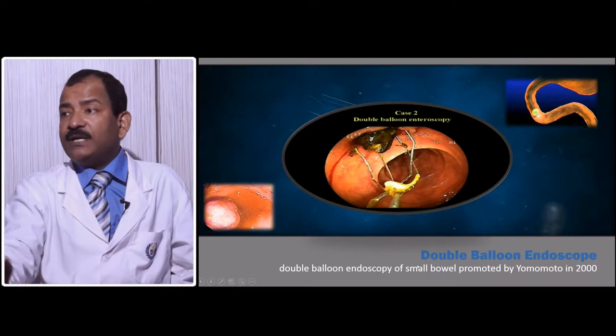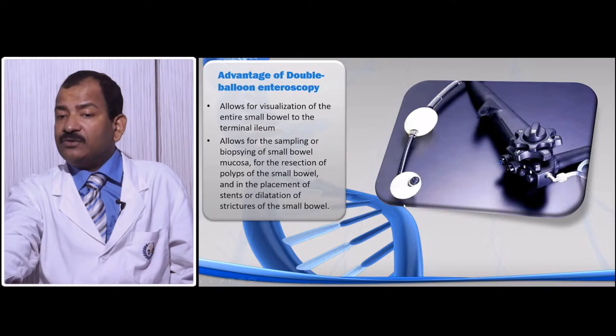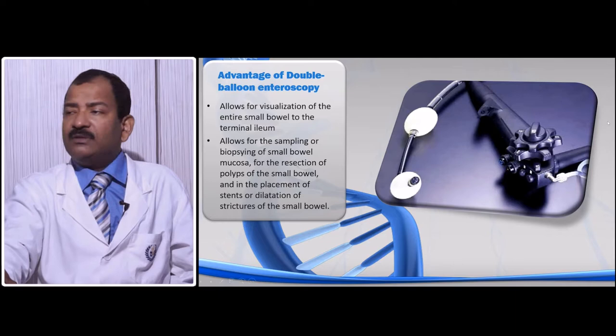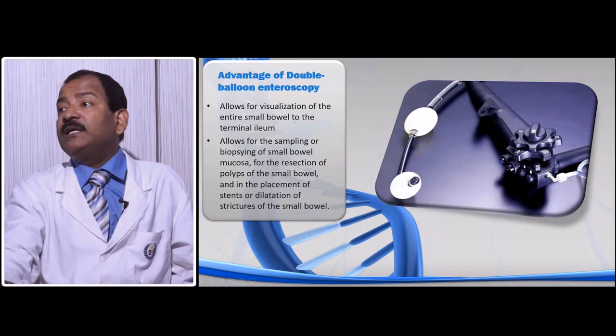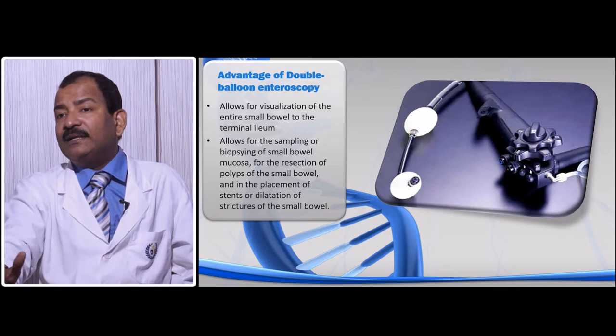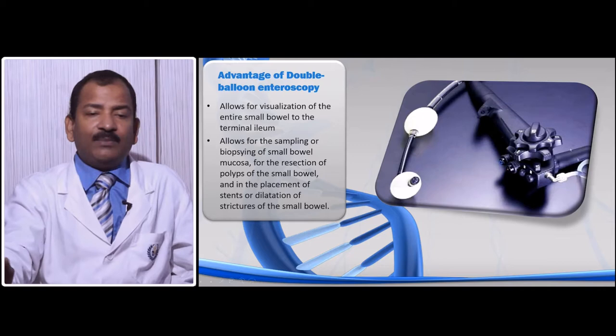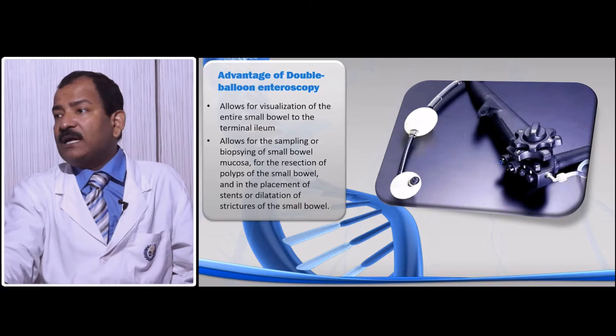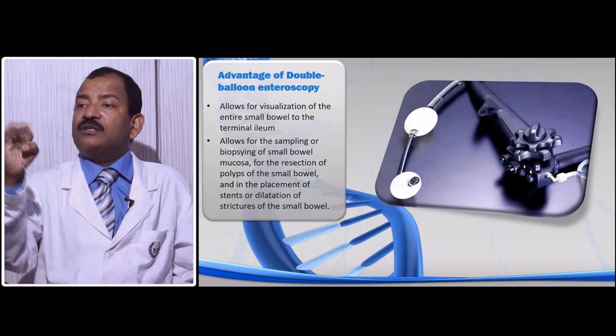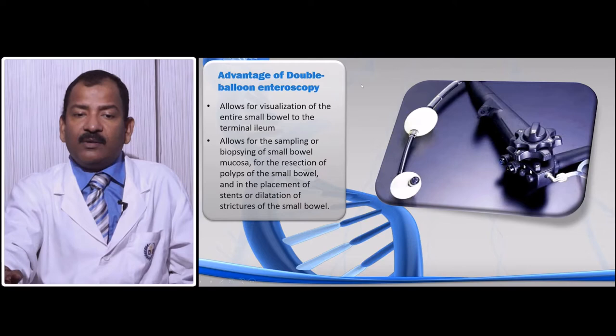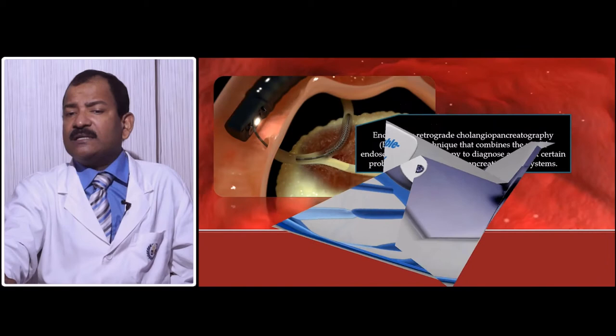Occasionally a balloon can rupture, causing retention or some injury. Good double balloon endoscopes are now available from companies like Fuji and Olympus, allowing visualization of the entire small bowel up to the terminal ileum. This is otherwise impossible with a conventional endoscope. It also allows sampling, biopsy, resection of small polyps, removal of strictures, and balloon dilatation of pathological strictures, though it must be used carefully and is not for everyone.